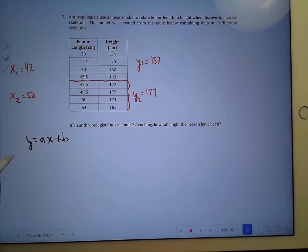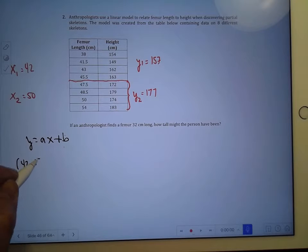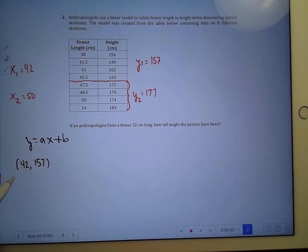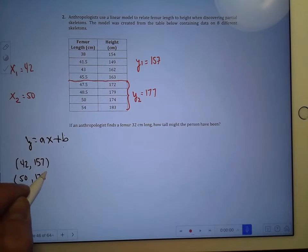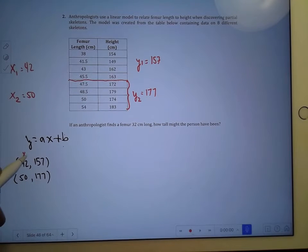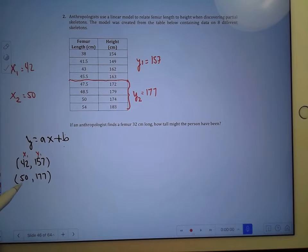What that allows me to do is to say, well, I've got an x1 y1—x1 is 42 and its corresponding y is 157—and my x2 is a 50 with 177 for y2. This is my x1 y1 and this is my x2 y2.